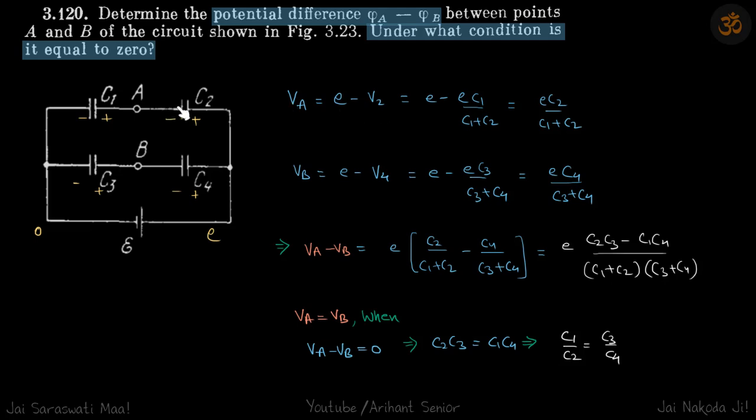Now, what is V2? These two are in series. We know that the potential on one of the capacitors when two of them are in series, on the second capacitor, the potential difference will be C1 divided by C1 plus C2 times the total EMF. So V2 is E C1 divided by C1 plus C2.